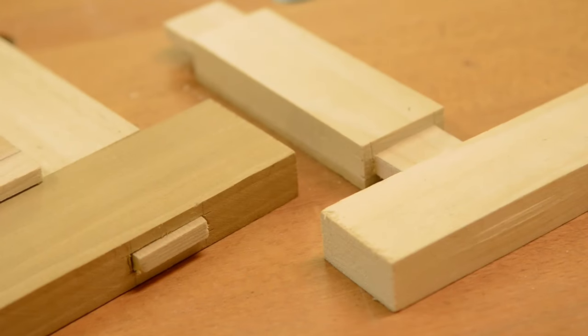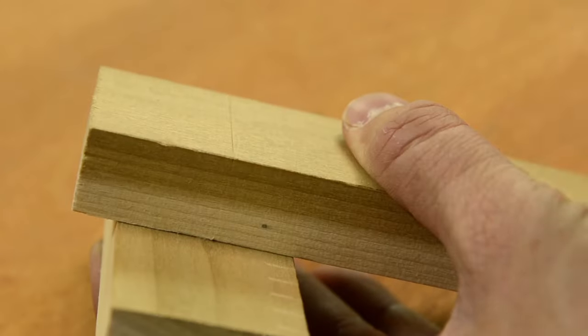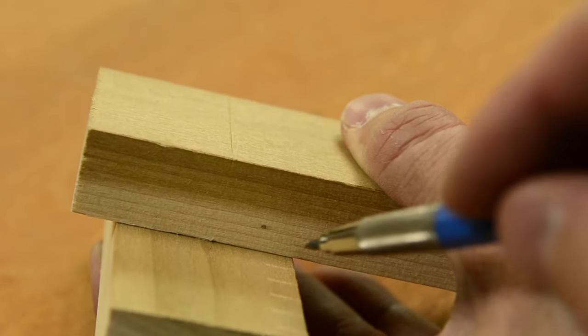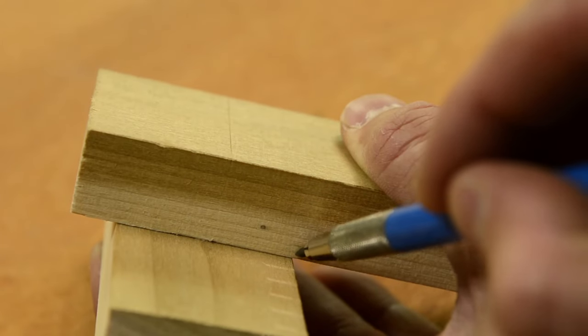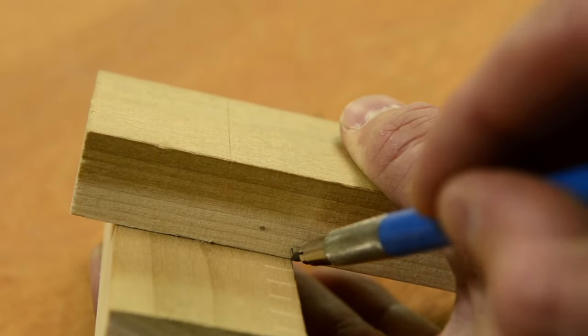If you're going to be doing a through tenon, you can also do the same method and set the tenon back to protrude maybe a quarter of an inch out the other end of the mortise.